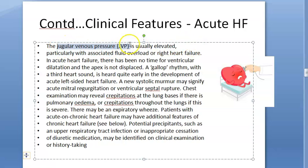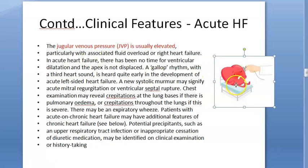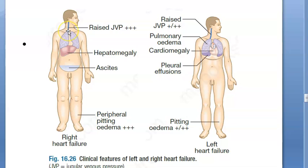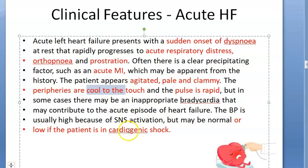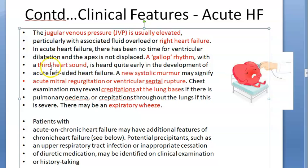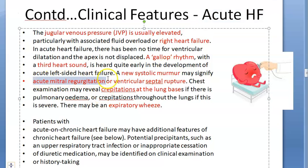The jugular venous pulse is usually elevated — very important. You make the patient lie at a 45-degree angle and check the right lateral neck for raised JVP. There will be pulmonary edema causing dyspnea and respiratory distress. There could be a gallop rhythm with the third heart sound. A new systolic murmur may signify acute mitral regurgitation or ventricular septal rupture — both acute conditions.